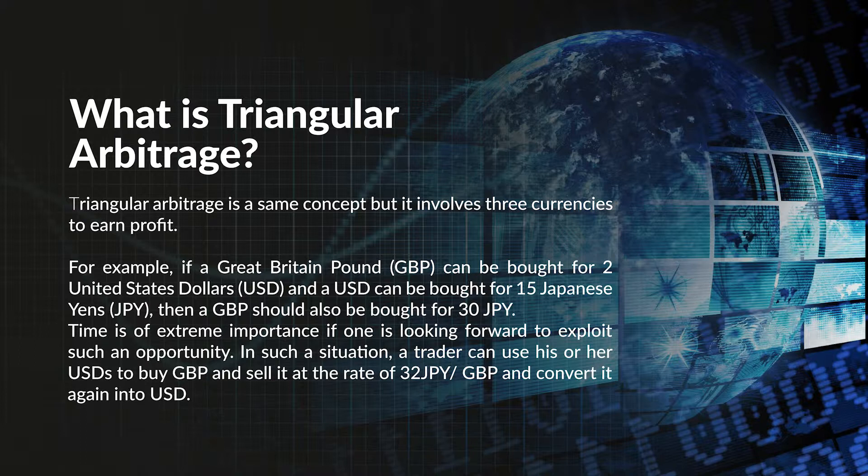Time is of extreme importance if one is looking to exploit such an opportunity. In such a situation, a trader can use his or her US dollars to buy Great Britain pounds and sell it at the rate of 32 Japanese yen per Great Britain pound, and convert it again into US dollars.